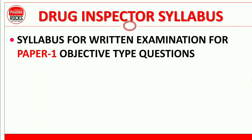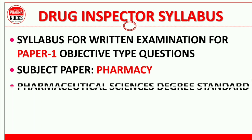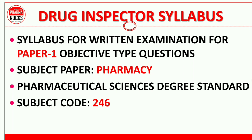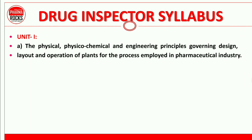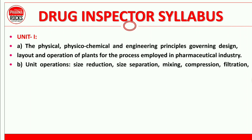We will now discuss the Drug Inspector syllabus. First, we discuss the syllabus for written examination Paper 1 — objective type questions, subject: Pharmacy and Pharmaceutical Science, degree standard, subject code number 246. Pharmacy graduates applying must study this syllabus. In Unit 1, you have to study physical, physico-chemical, and engineering principles governing design, layout, and operations of plants for processes employed in the pharmaceutical industry, and unit operations like size reduction and separation.